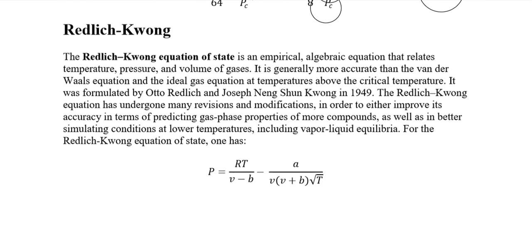The next modification of the ideal gas equation is the Redlich-Kwong equation. The Redlich-Kwong equation is an empirical equation that relates temperature, pressure, and volume, but it is generally more accurate than the Van der Waals equation, particularly above the critical temperature. It was formulated by Redlich and Joseph Kwong in 1949, and has undergone many revisions to improve accuracy or to better simulate conditions near lower temperatures, including vapor-liquid equilibrium.